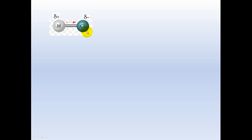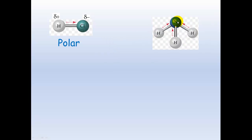Looking at examples: hydrogen chloride has two different elements and chlorine is more electronegative, so it gets a delta negative and hydrogen gets a delta positive. It is an asymmetrical molecule, so it is polar. For ammonia, nitrogen has a higher electronegativity, giving a delta negative on nitrogen and delta positives on hydrogen. It is also asymmetrical with a definite negative and positive end, so it is polar.